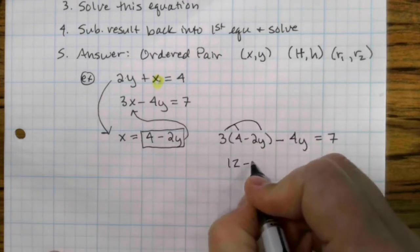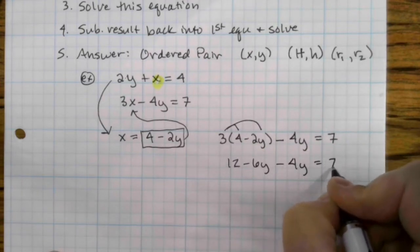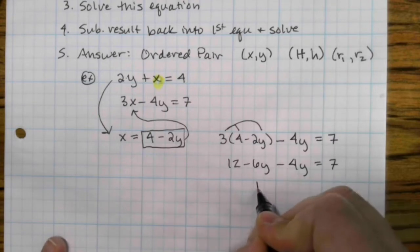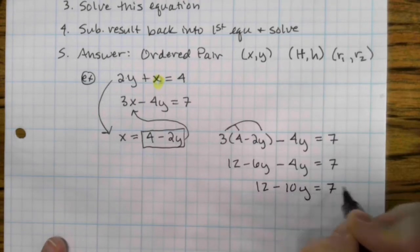So 12 minus 6y minus 4y is 7. Normally now you will simplify because you have like terms. Negative 6 minus 4 is negative 10. So 12 minus 10y is 7.